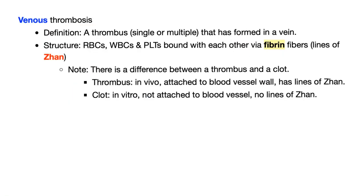Venous thrombosis — what's the definition? A thrombus formed in a vein. Structure: this is a thrombus and not a clot. A thrombus is in vivo, inside a living human body, attached to the blood vessel wall, and has lines of Zahn. Lines of Zahn are the fibrin fibers. A clot is in vitro or in a dead body, not attached to the blood vessel wall, and has no lines of Zahn.